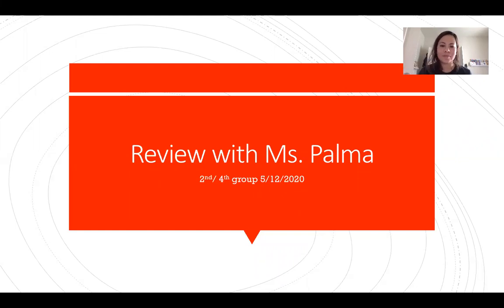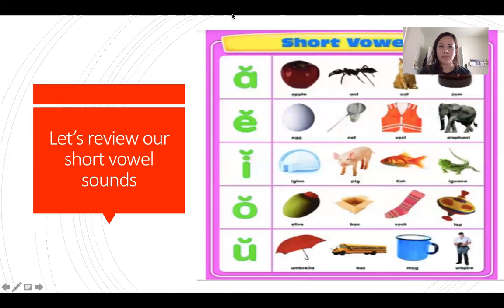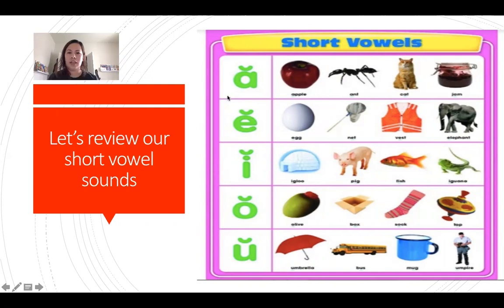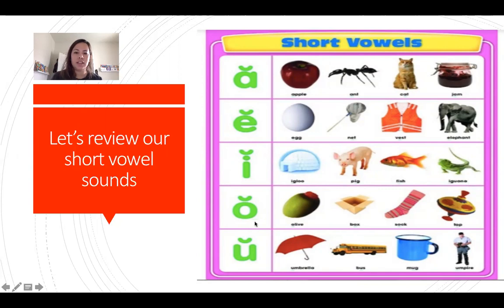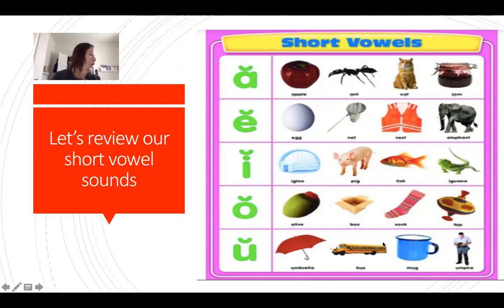Now let's review our short vowel sounds. Starting with the A: 'a' for apple, ant, cat, jam. The letter E: 'e' for egg, net, vest, elephant. The letter I: 'i' for igloo, pig, fish, iguana. The letter O: 'o' for octopus, olive, box, sock, top. And our letter U: 'uh' for umbrella, bus, mug.